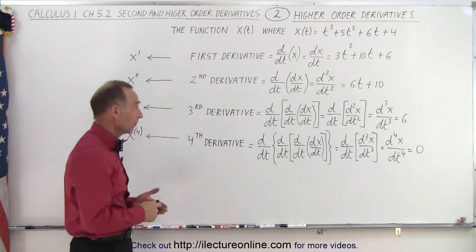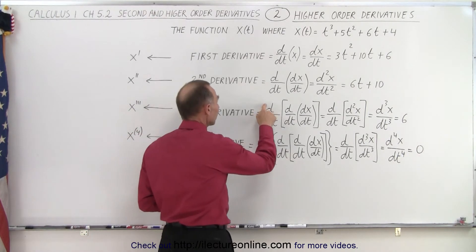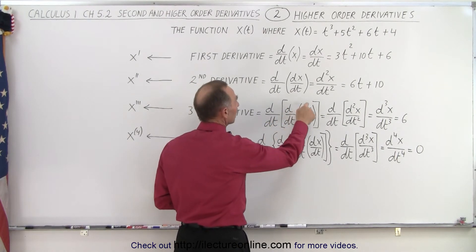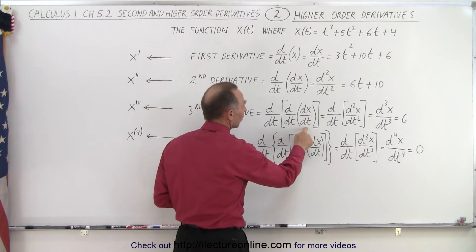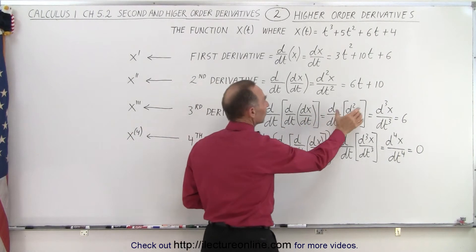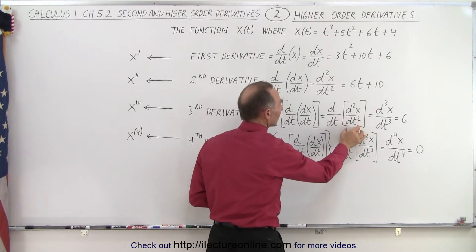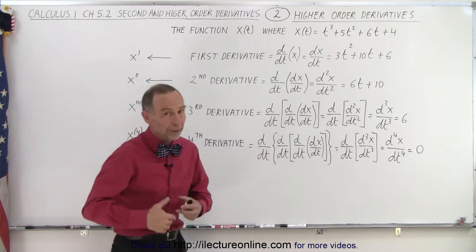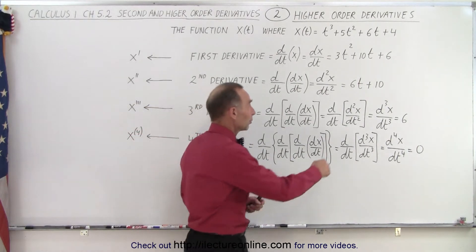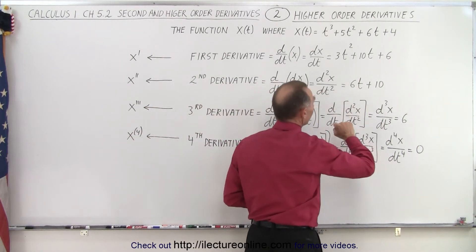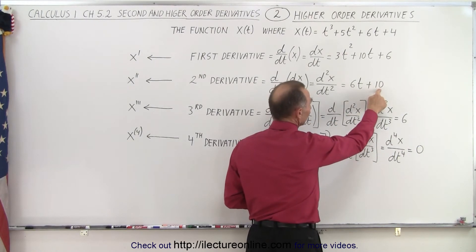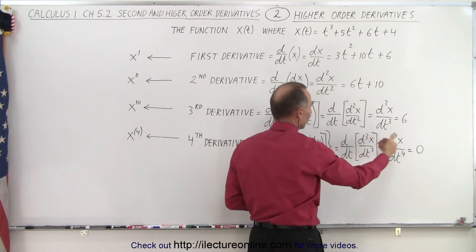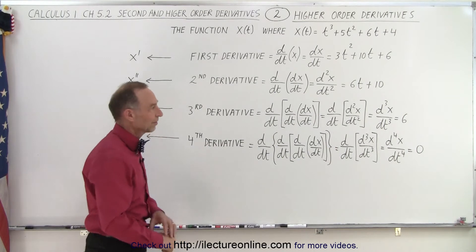Now we take the third derivative — the derivative with respect to time of the second derivative of x with respect to time — which gives us the third derivative, written as d³x/dt³. We take the derivative of 6t plus 10 and get just 6, because the derivative of 10 is 0, and the derivative of 6t is 6.